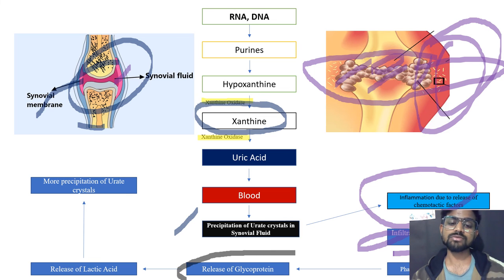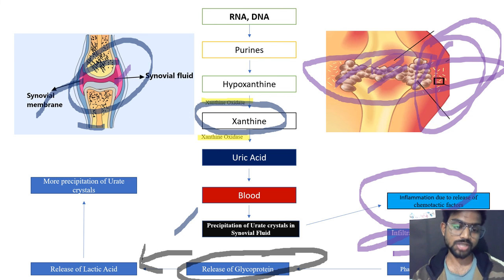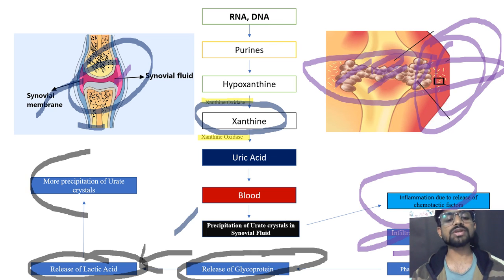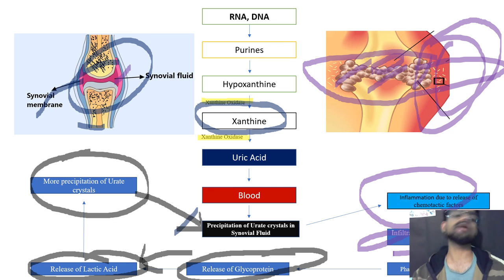The damaged tissues cause release of glycoprotein, which triggers a process that increases acidity — there is a rise in acidic pH and release of lactic acid. This lactic acid again triggers more precipitation of urate crystals, and these urate crystals once again cause acute gout. This is the complete pathophysiology of gout.